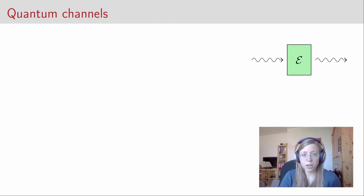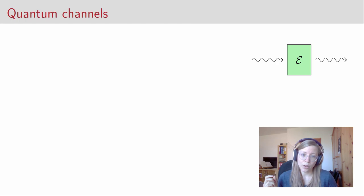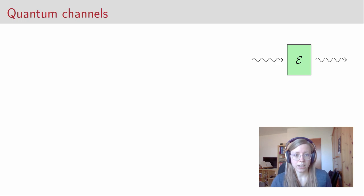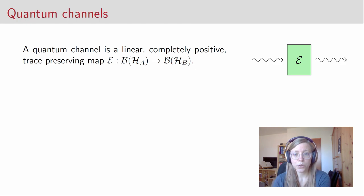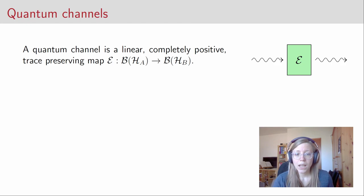That was everything we need to know about the preparation stage — it is described by density operators. Now we come to the next stage: quantum channels. This is everything that happens after the preparation, when Alice sends her prepared states to Bob. Mathematically, a quantum channel is a linear, completely positive, and trace-preserving map, which we usually denote with a curly E. It is a map from the operators of the first Hilbert space H_A to the operators over the second Hilbert space H_B.